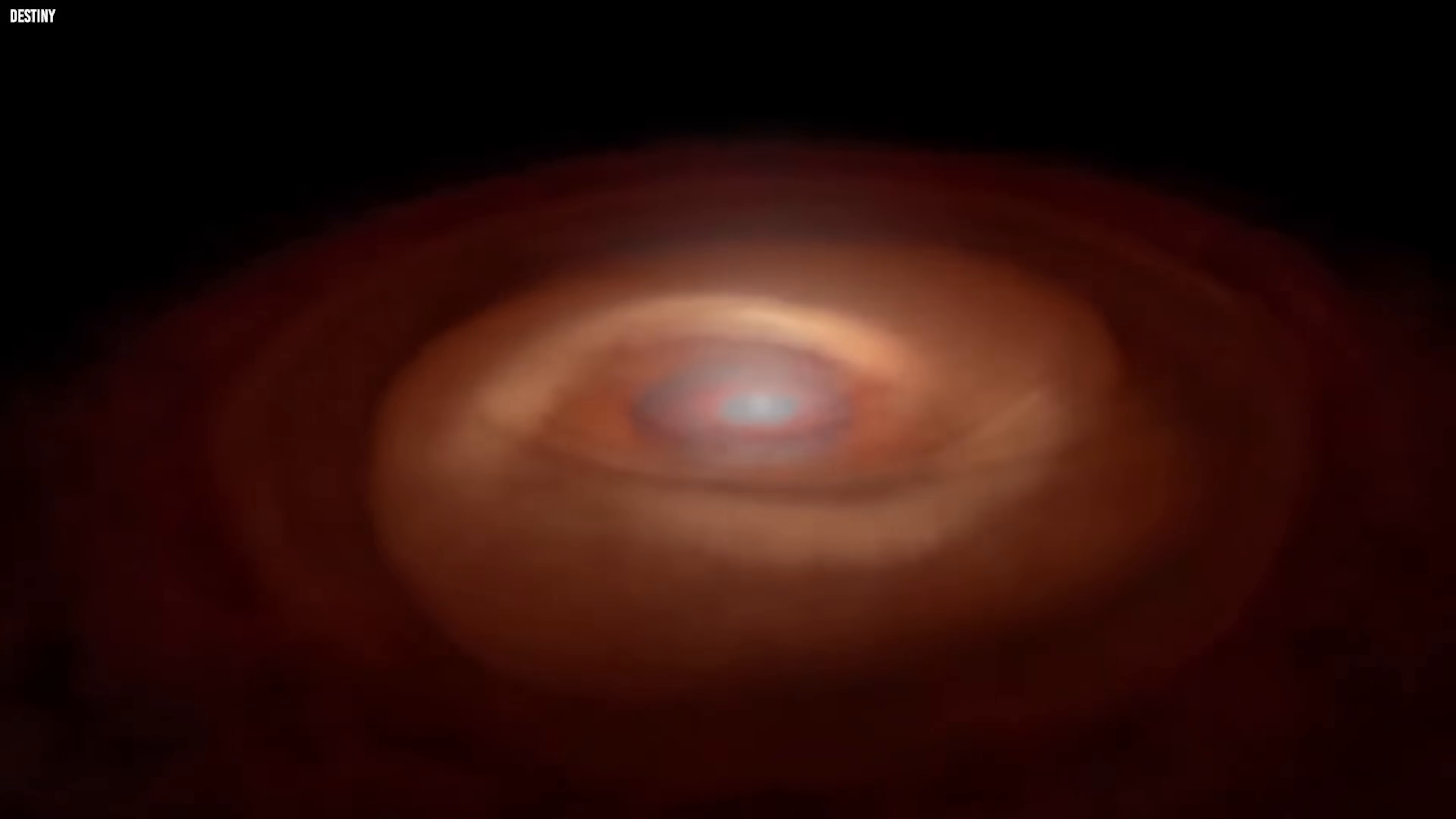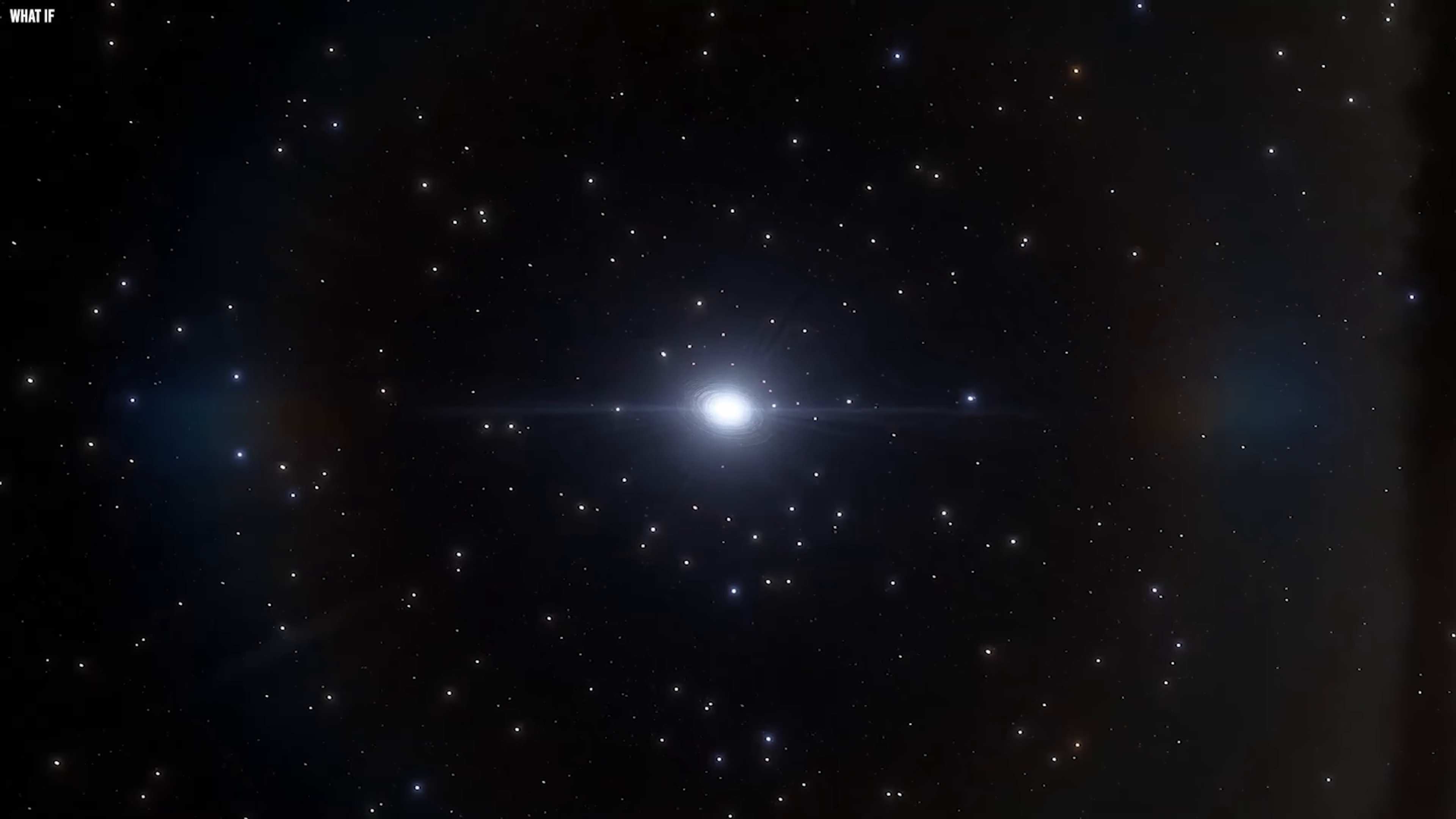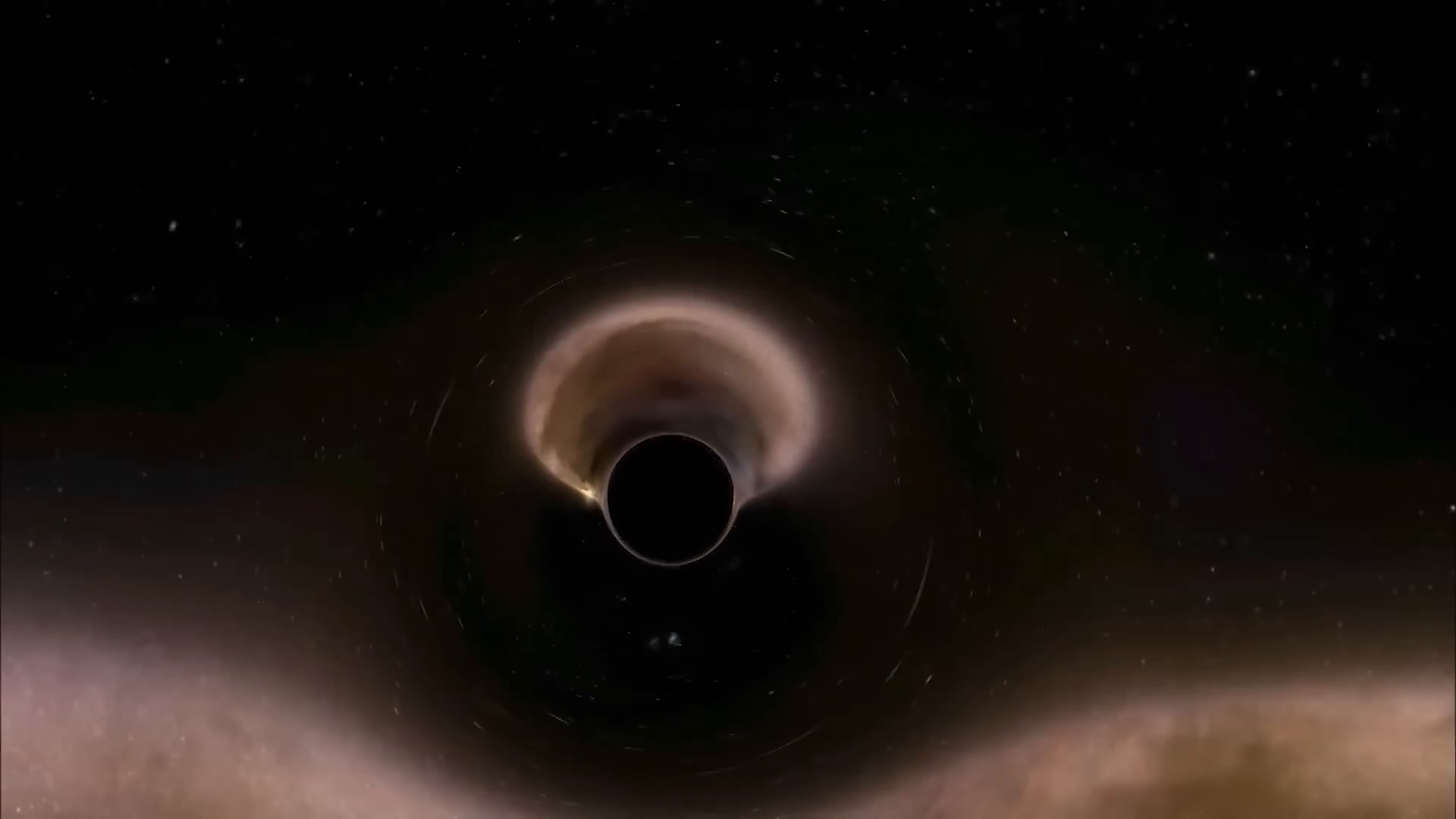If one dormant 400 million solar mass black hole exists this early, there could be many more. Perhaps entire populations of early black holes formed long before galaxies reached maturity. Perhaps galaxies built themselves around black holes, not the other way around.